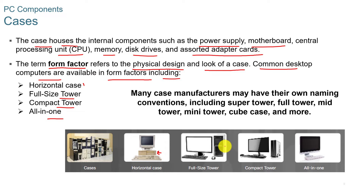The horizontal case is an older model. The full-size tower is the most common model you'll see in most gaming desktops today. The compact tower is slimline with smaller components — a lot of times you'll have laptop-type components in there, so your CD or DVD will be a laptop-type component. And then you have all-in-ones, where the computer and everything is built into the monitor and comes as one device.